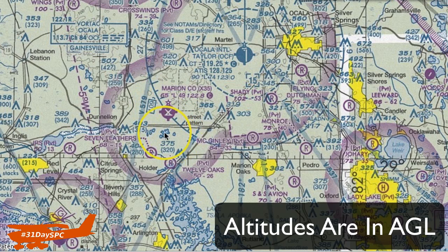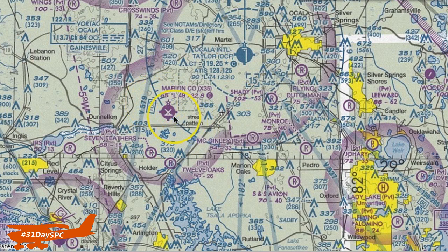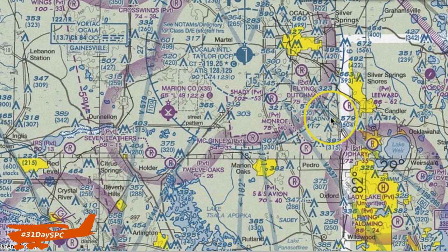That means from the surface to 699 feet is class golf airspace. Above that is class E airspace. Outside of this, everywhere else out here is known as domestic en route — all this area, just follow my cursor around. Domestic en route is where class echo starts at 1200 feet. So domestic en route is my 1200 feet, and my transition area is my 700 feet.